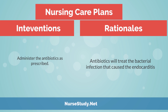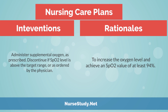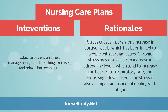Intervention: administer the antibiotics as prescribed. Rationale: antibiotics will treat the bacterial infection that caused the endocarditis. Intervention: administer supplemental oxygen as prescribed; discontinue if oxygen level is above the target range or as ordered by the physician. Rationale: to increase the oxygen level and achieve at least 94%. Intervention: educate patient on stress management, deep breathing exercises, and relaxation techniques. Rationale: stress causes a persistent increase in cortisol levels, which has been linked to cardiac issues. Chronic stress may also increase adrenaline levels, which tend to increase heart rate, respiratory rate, and blood sugar levels. Reducing stress is also important for managing fatigue.